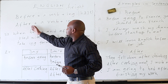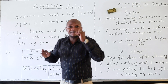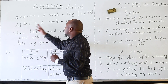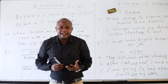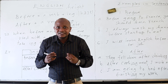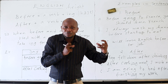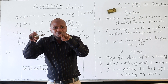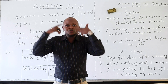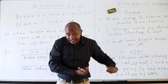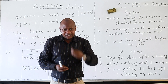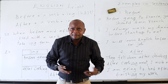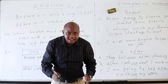We are going to learn 'before' plus a verb plus ING form, and 'after' plus a verb plus ING form. This means that when 'before' is followed by a verb, we put the verb in ING form, and when 'after' is followed by a verb, we also put the verb in ING form. Don't say 'before to go,' 'before to speak,' 'before go,' or 'before speak.' No — say 'before going,' 'before speaking.'